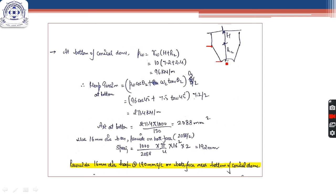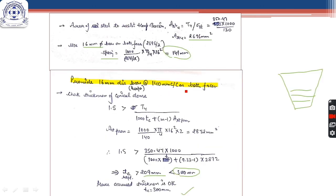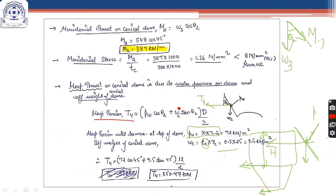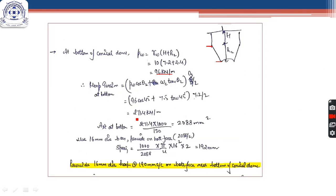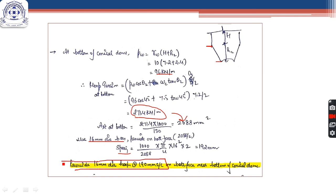At the bottom of the conical dome, water pressure pw = γw·(h + h2) = 96 kN/m². The hoop tension at the bottom = (pw·cos θ2 + wc·tan θ2) × d3/2. Note that at the bottom we use d3/2 instead of d/2, since the diameter is d3. Calculating the reinforcement from this hoop tension and assuming bar diameter, we get 6 mm dia bars at 190 mm c/c at the bottom of the conical dome — less reinforcement than at the top, as expected.